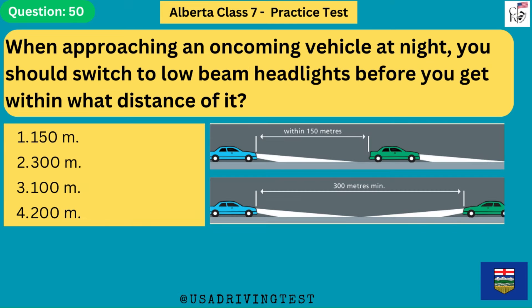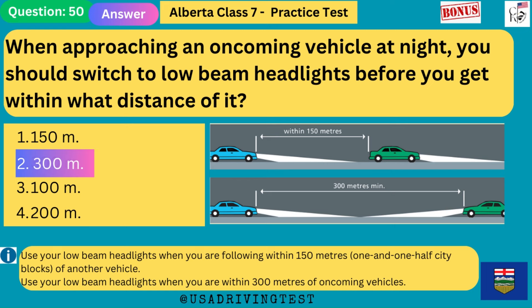When approaching an oncoming vehicle at night, you should switch to low-beam headlights before you get within what distance of it? 1. 150 meters. 2. 300 meters. 3. 100 meters. 4. 200 meters. The answer is 2: 300 meters. Use your low-beam headlights when you are following within 150 meters (1 and a half city blocks) of another vehicle. Use your low-beam headlights when you are within 300 meters of oncoming vehicles.